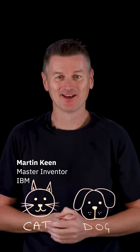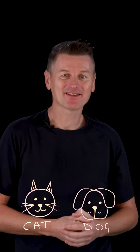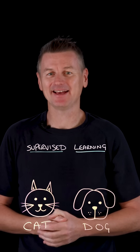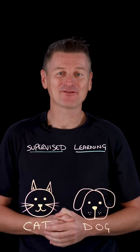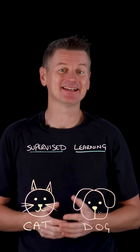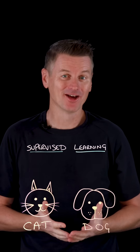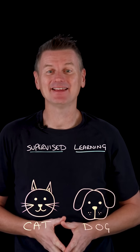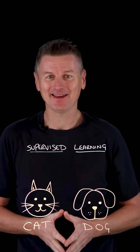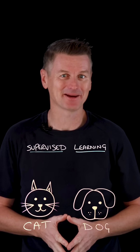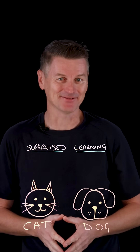Consider building an AI model that can recognize pictures of cats and dogs. Supervised learning requires a dataset where every example is labeled, but creating these labels can be time-consuming and expensive.